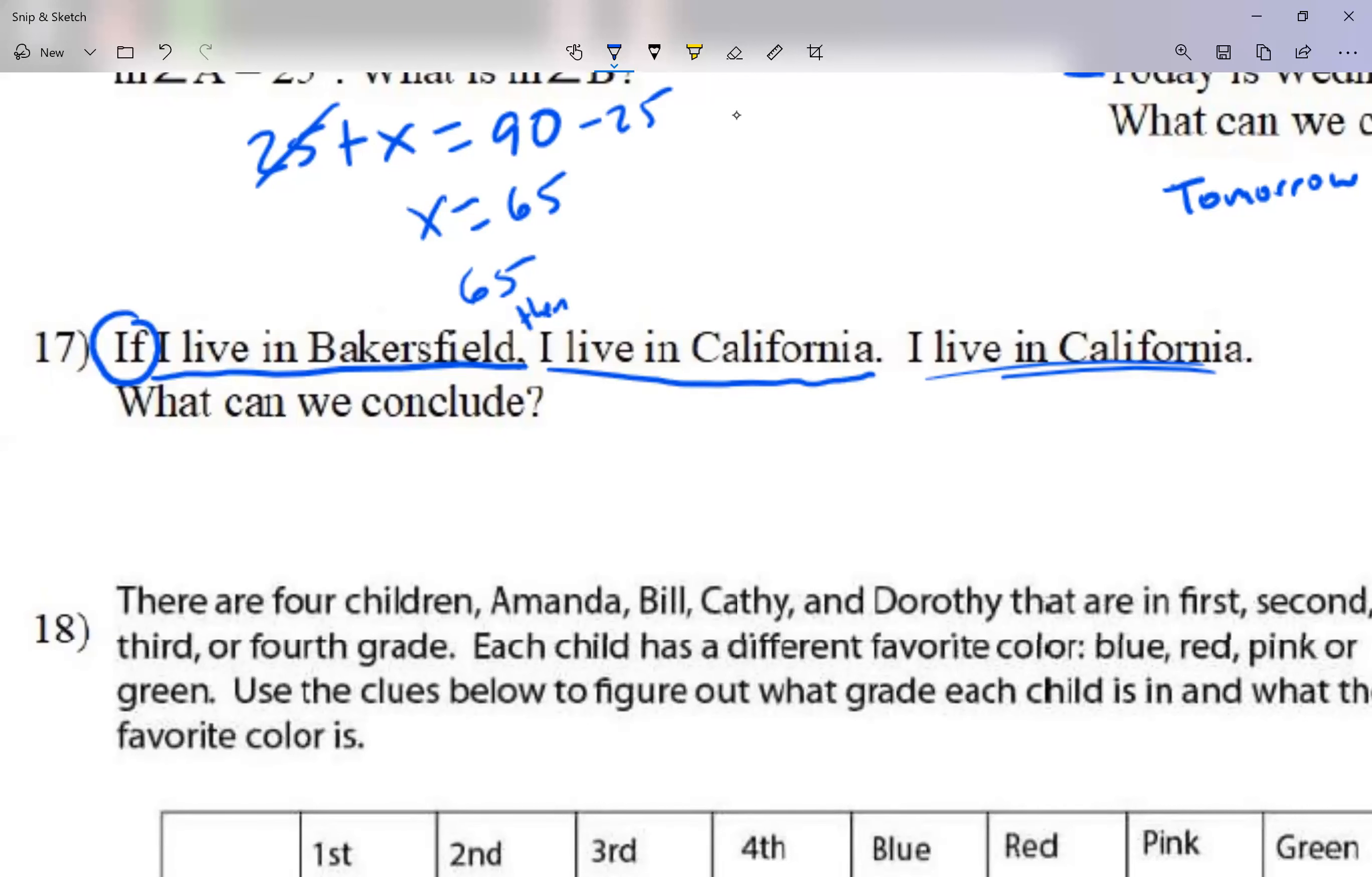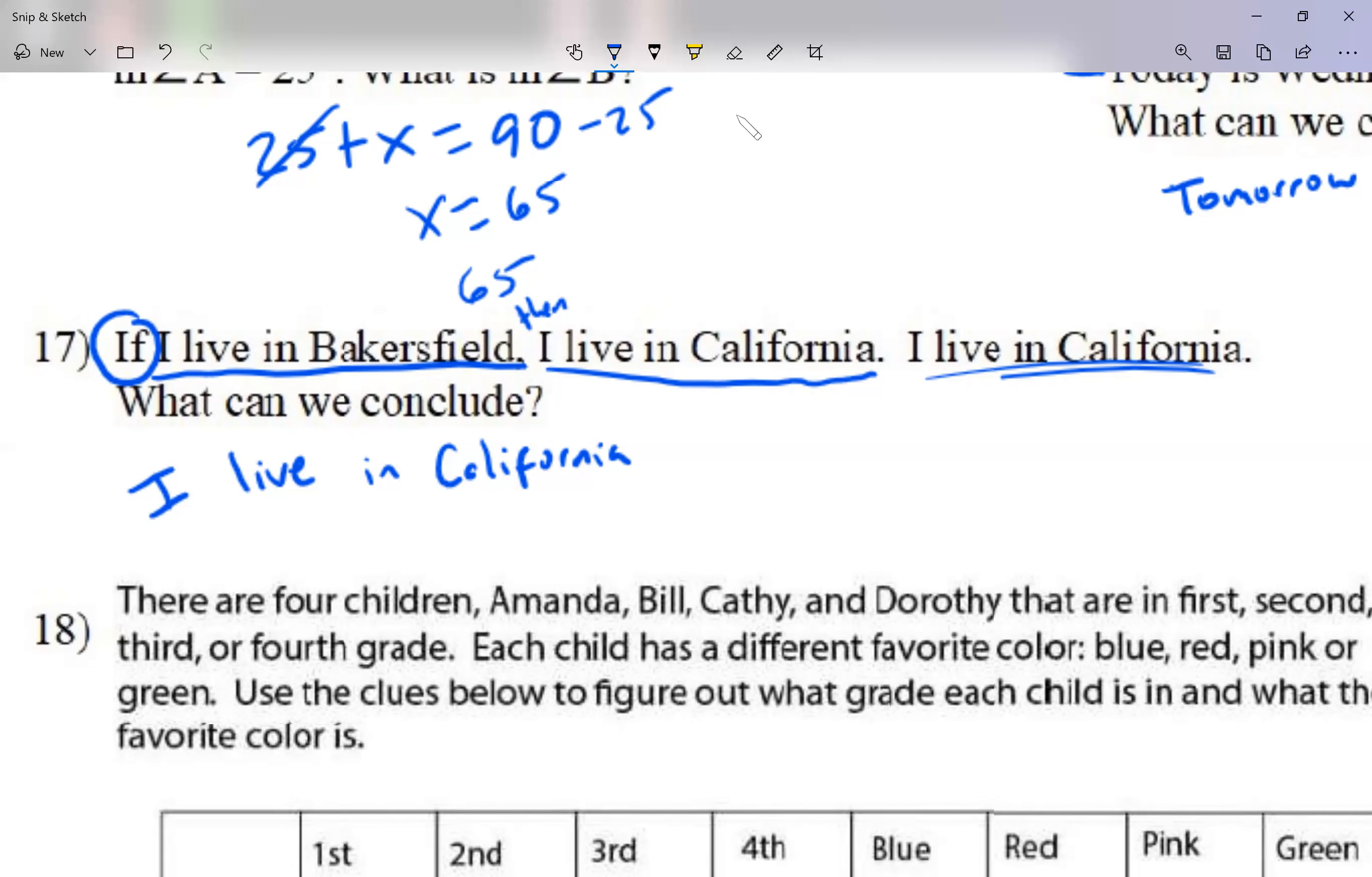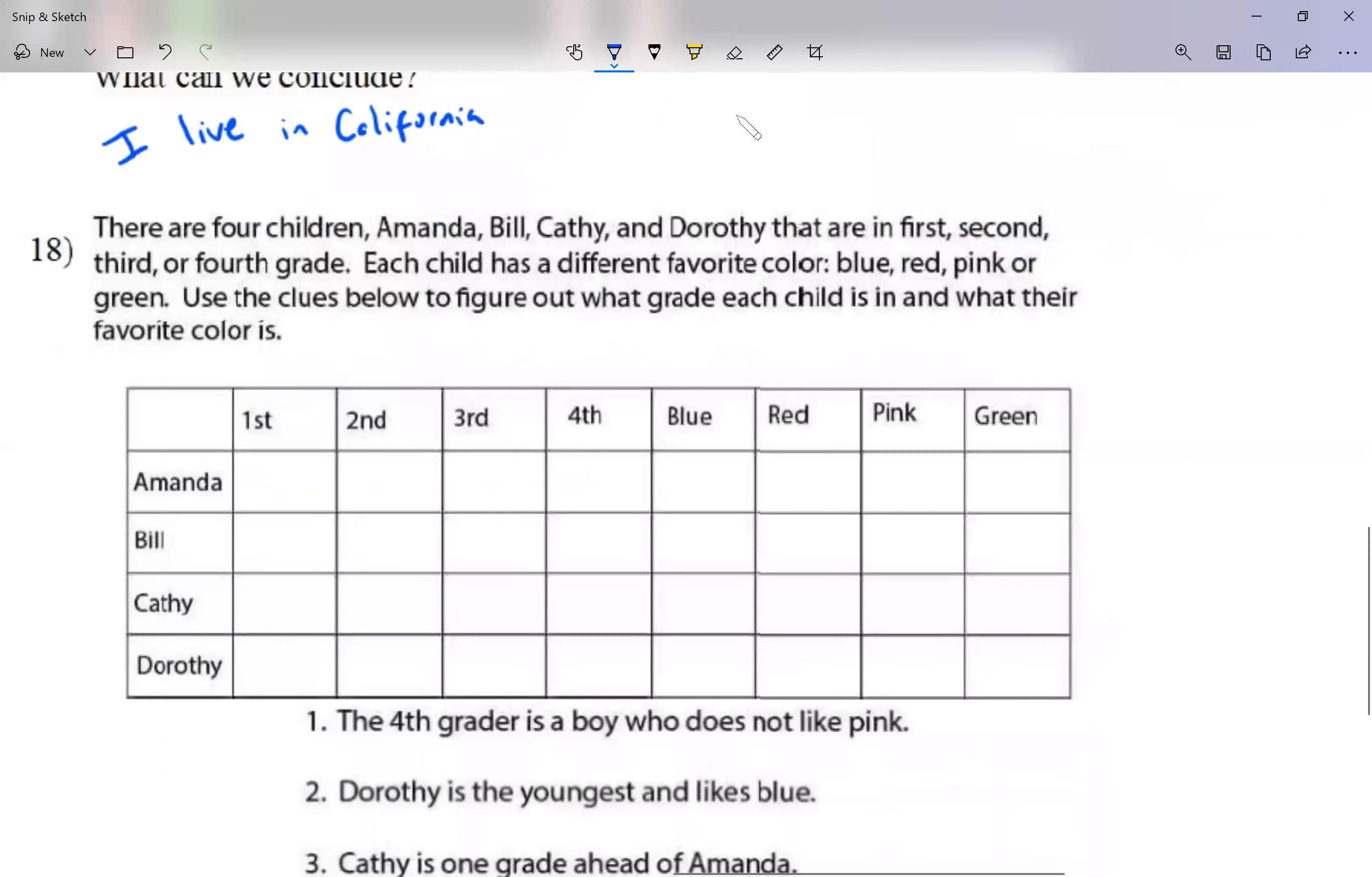...what can we conclude? Notice I didn't tell you the hypothesis was true. Remember, hypothesis is the if part. I told you the then part is true. So what can we conclude? I live in California. That's all I can conclude. How do you know I don't live in Fresno, or Lamont, Delano? I can live somewhere else in Bakersfield. In order for us to say, to get something from the first statement - if I live in Bakersfield, I live in California - my hypothesis, the if part, has to be true. Here it's not given. Another way we're going to see it is here, like this one.